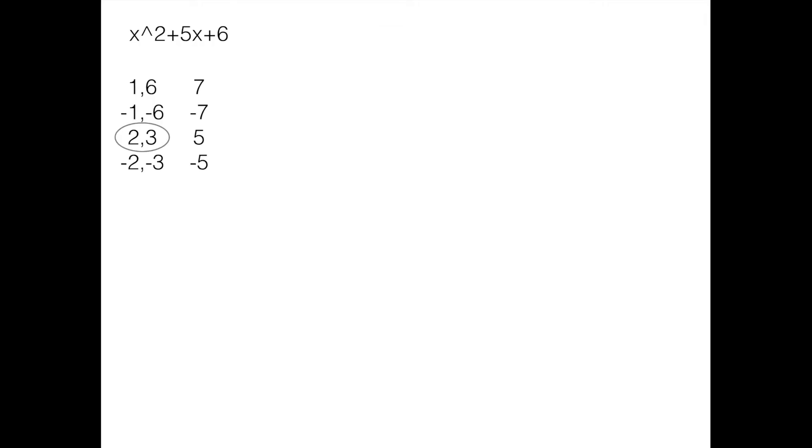Like we said earlier, the factors need to add to b, so we're going to use 2 and 3. When we sub in 2 and 3 for y and z, we get quantity x plus 2 times quantity x plus 3 equals x squared plus 5x plus 6.